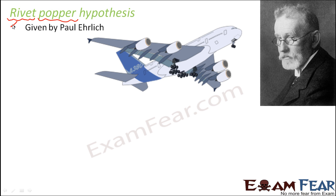This hypothesis uses the example of an airplane. An airplane has various parts joined together to form the whole structure. The different parts of an airplane are joined by small bolts called rivets. Once the airplane is constructed using many different parts joined by rivets, you get this big plane. Inside this plane, multiple passengers sit and travel.